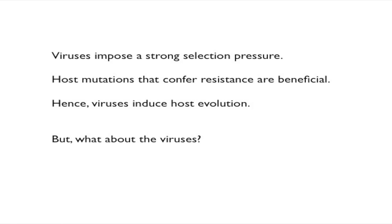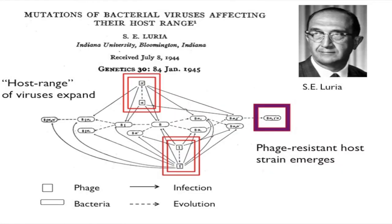But what about the viruses? The Luria-Delbrück experiment stops there — it's only interested in the nature of mutation: is it acquired or is it independent? A little less well-known is that a few years later, Luria decided to go back. He said: fine, we got these bacteria to evolve resistance to viruses, but can the viruses in turn evolve counter-resistance? Can they acquire a new ability to infect these previously resistant bacterial strains? And the answer was yes.